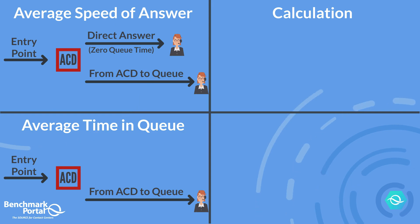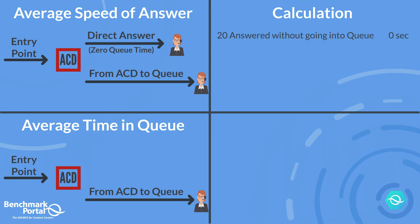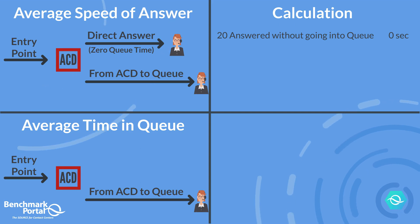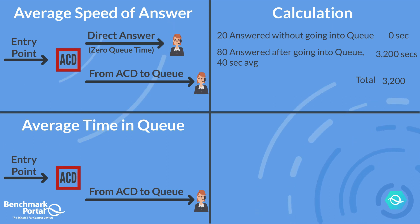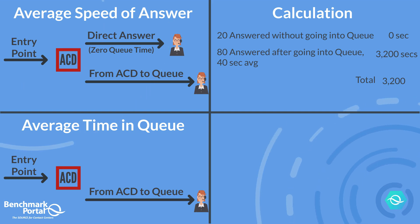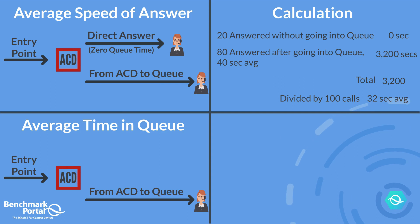Let's do the math to determine the metrics. For ease of understanding, let's say the center takes 100 calls, of which 20 go straight to an agent without entering queue, with zero queue time for these. The other 80 calls enter into queue and are answered in an average of 40 seconds, for a total of 3,200 seconds in queue. So 3,200 seconds divided by 100 calls equals an ASA of 32 seconds.